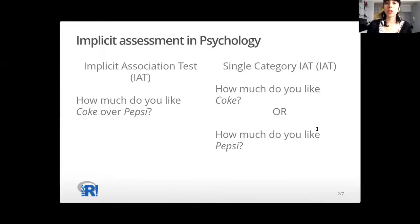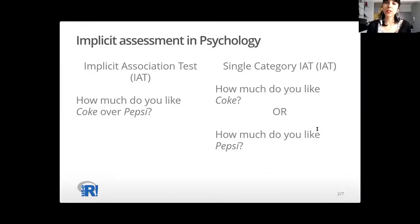The two most commonly employed measures are the Implicit Association Test, which can answer the question how much do you like Coke or Pepsi, and the Single Category Implicit Association Test, which can answer the question how much do you like Coke or how much do you like Pepsi. So the IAT provides a comparative measure of preference between two objects, while the Single Category can provide a measure that is absolute toward just one object.